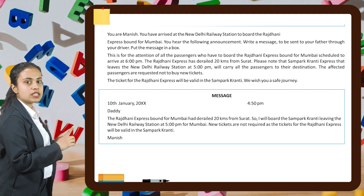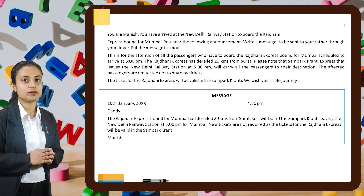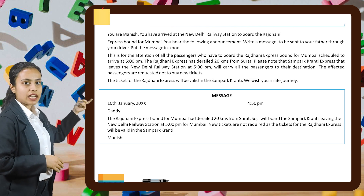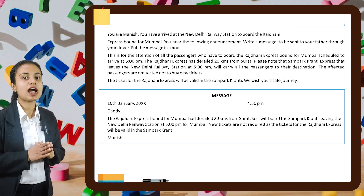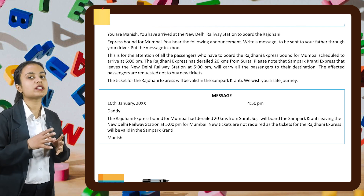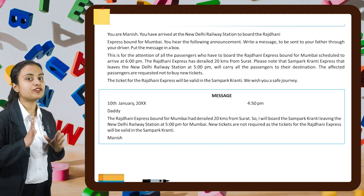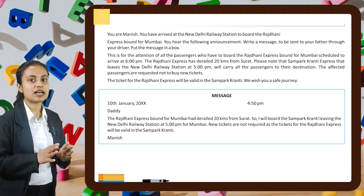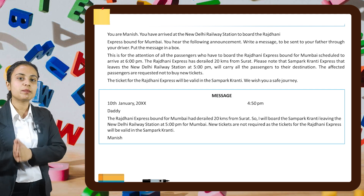Write a message to be sent to your father through your driver. We start with a box and write 'MESSAGE' in capital letters. Then we write the date and time, and address it to 'Daddy.' Content: 'The Rajdhani Express bound for Mumbai has derailed 20 kilometres from Surat, so I will board the Sampark Kranti leaving New Delhi railway station at 5pm for Mumbai. New tickets are not required as Rajdhani Express tickets will be valid on the Sampark Kranti.'